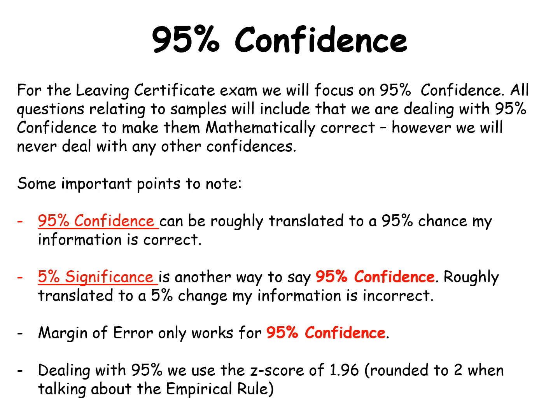So think of it this way. If there's a 95% chance I'm right, there's a 5% chance I'm wrong. And that's basically what the 95% confidence and the 5% significance are saying. One is saying just the same thing as the other, just in a different way.